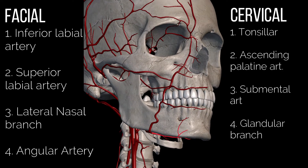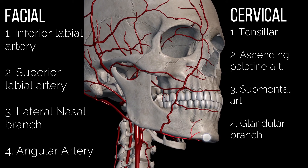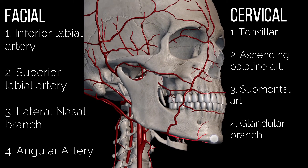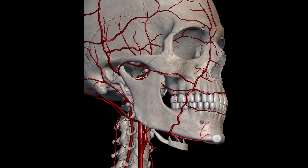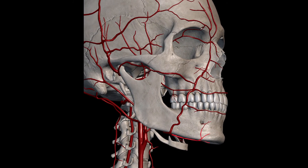The facial artery supplies the palatine tonsils, soft palate, pterygoid, mylohyoid, and digastric muscles, the submandibular gland, and all of the face.